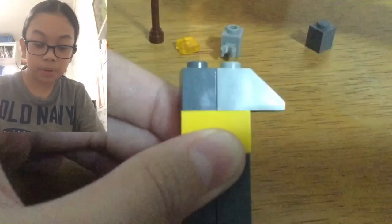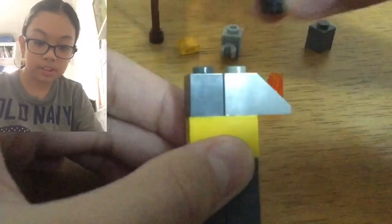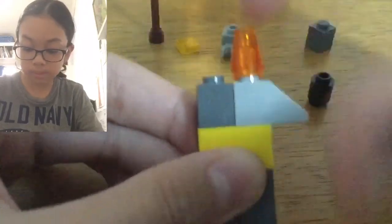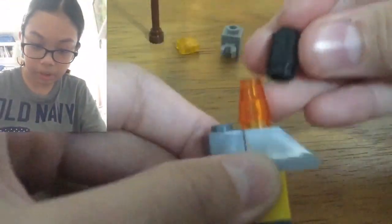On top of our 1x2 slope piece, the 1x1 cone. And on top of that, we'll have the 1x1 round brick.